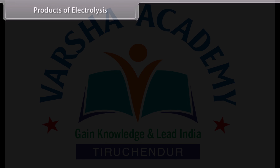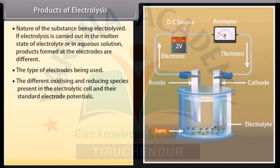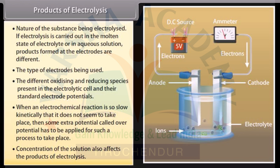Products of electrolysis depend mainly upon the following factors: Nature of the substance being electrolyzed — if electrolysis is carried out in molten state or in aqueous solution, products formed at the electrodes are different. The type of electrodes being used — if the electrode is inert, it does not take part in the reaction; if reactive, it takes part in the electrode reaction. The different oxidizing and reducing species present and their standard electrode potentials. When an electrochemical reaction is kinetically slow, some extra potential called overpotential has to be applied. Concentration of the solution also affects the products of electrolysis.